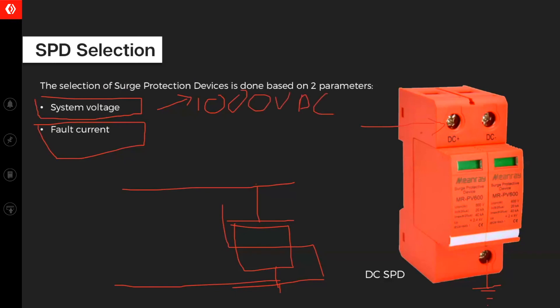Fault current would depend on circuit impedance and so on. But generally, if you don't know, you can choose something like a 40 kilo ampere SPD. There are various ranges, 15 kilo amperes, 40 kilo amperes and so on. Type 2, even a 40 kilo amperes is fine. We'll never have a very high current in DC side. This is how you select your system.